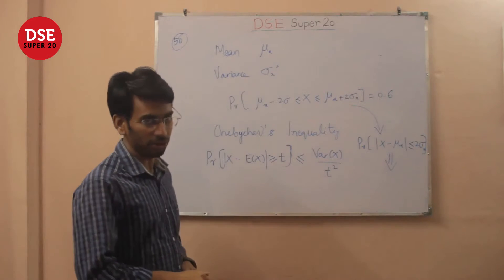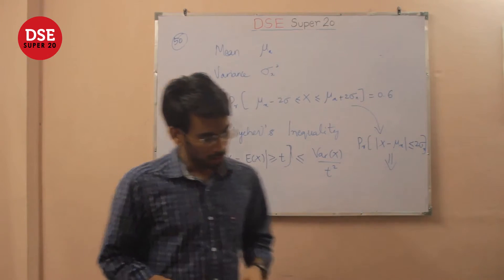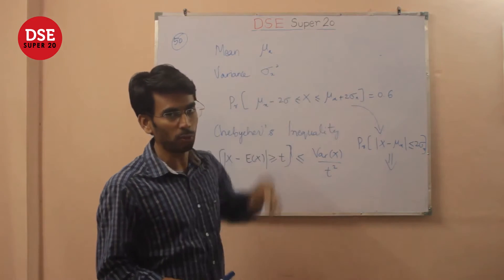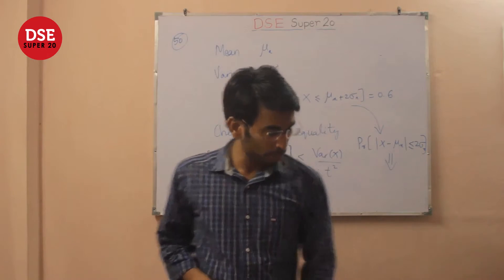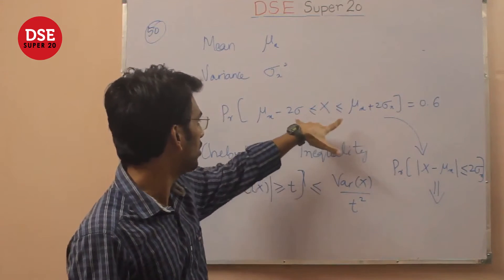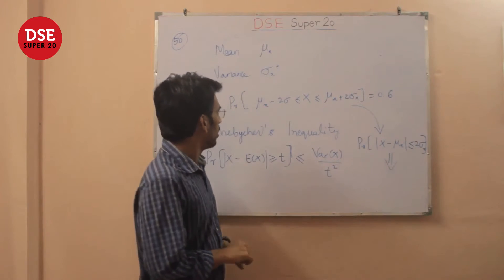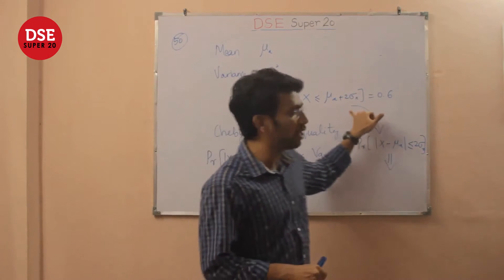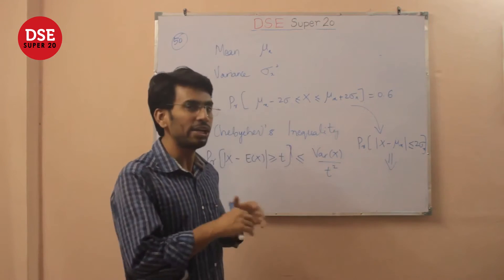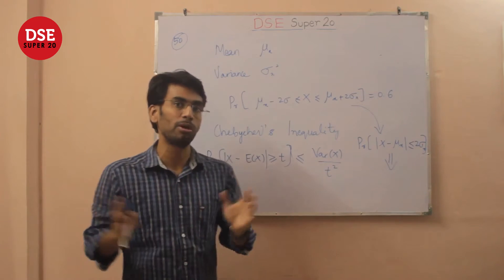Coming to question 15, this is again a straightforward question. We are given a random variable x with mean μ_x and variance σ_x². We are given the condition that P(μ_x − 2σ ≤ x ≤ μ_x + 2σ) = 0.6. Let's first see whether this can actually happen — this is a very large range of values, two standard deviations.